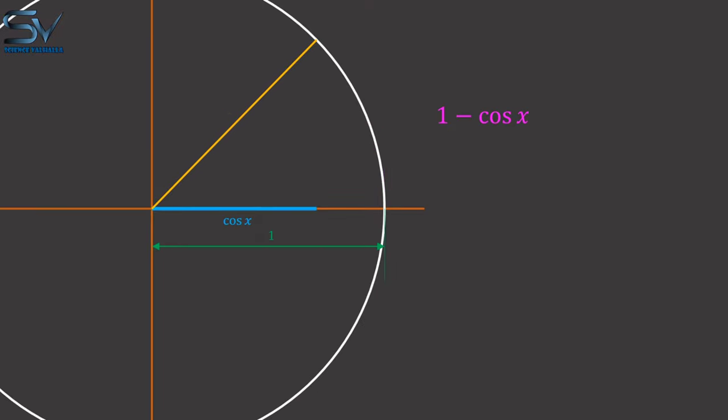Let's now reduce the angle. As the angle decreases, cosine of x increases, and the gap is narrowing. Now that the angle has been reduced further, the cosine of x has increased more.